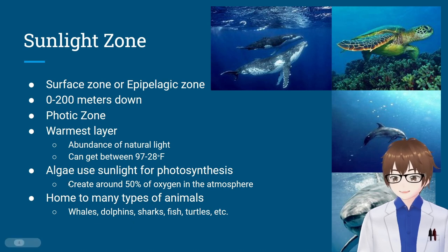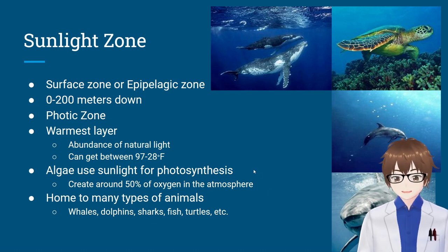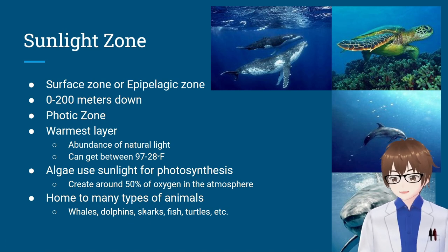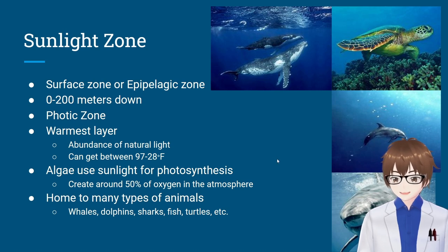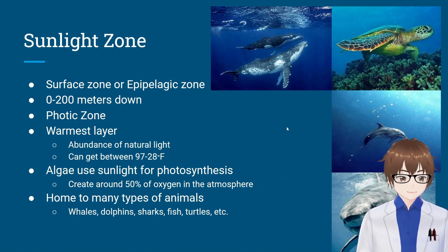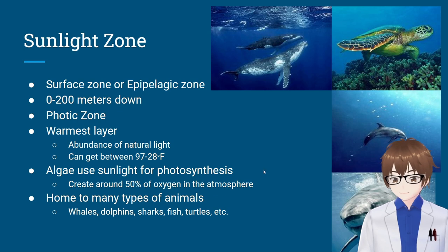Algae use sunlight for photosynthesis and create about 50% of all the oxygen in the atmosphere. Most people think trees make the most oxygen, but it mostly comes from our oceans through algae. This zone is home to many different types of animals — whales, sharks, dolphins, fish, turtles. Basically everything you think about in the ocean, other than deep-ocean creatures, can be found here. I think these are humpback whales, sea turtles, and there's a great white there.